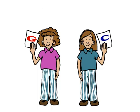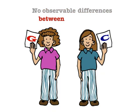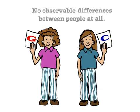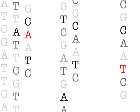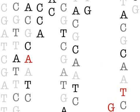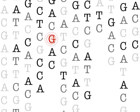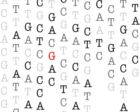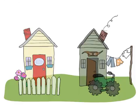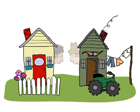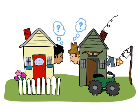Most SNPs, however, seem to lead to no observable differences between people at all. Since variants are passed down from one generation to the next, the number of differences between your DNA and your neighbour's can tell you how closely you are related to each other.